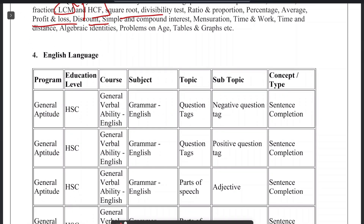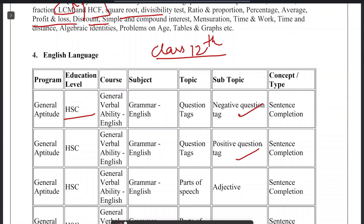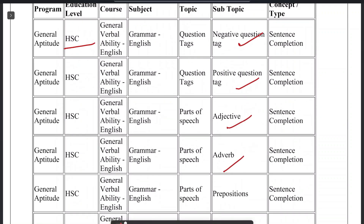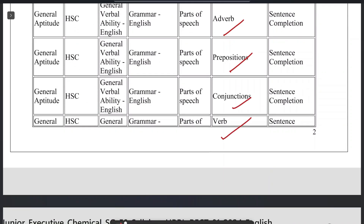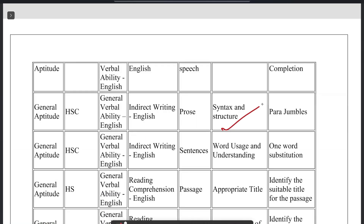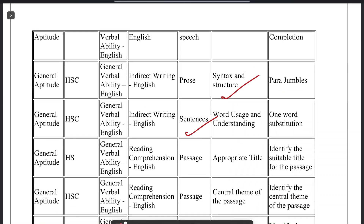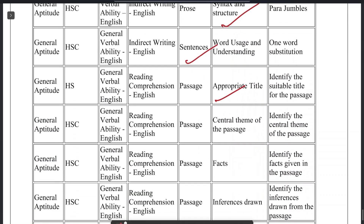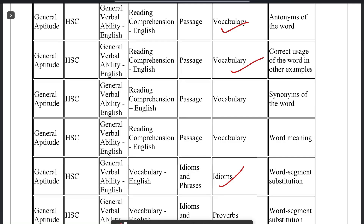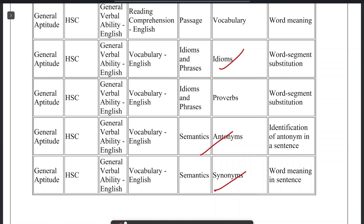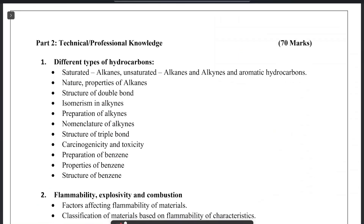The level of English language is HSC — that is higher secondary examination level. From the English language portion, questions will be asked on negative question tagging, positive question tagging, adjective, adverb, preposition, conjunction, parts of speech, syntax and structure, sentence making, passages, vocabulary, idioms, proverbs, synonyms, and antonyms. That covers the 30-mark general section.